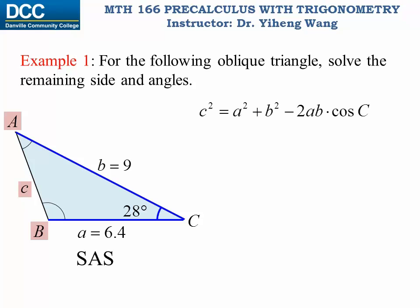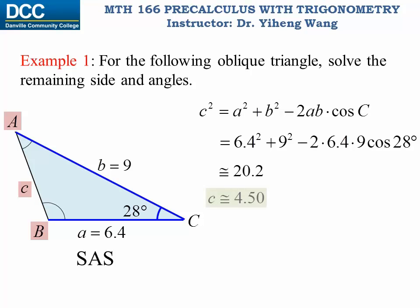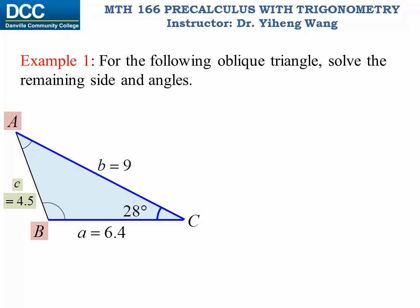Using one of the three equations of the Law of Cosines, and substituting the known values of sides a, b and angle c, we can solve for c² to be 20.2, and taking the square root, length c is approximately 4.5. At this point we know side c and angle c, so we could apply Law of Sines — however, notice that angle b appears to be obtuse, so to avoid confusion, let's stick with Law of Cosines.